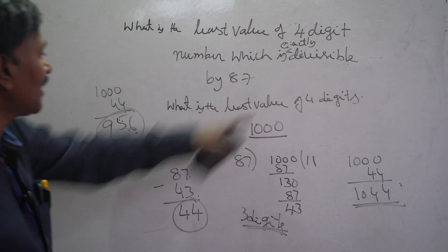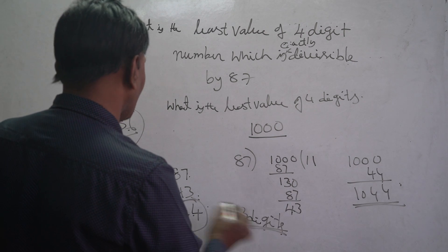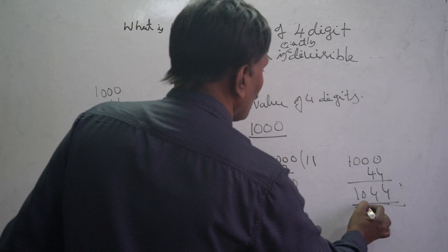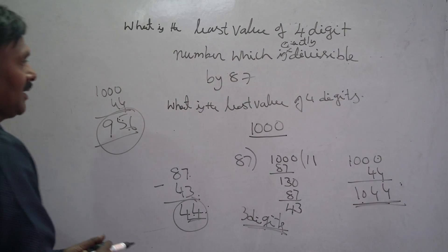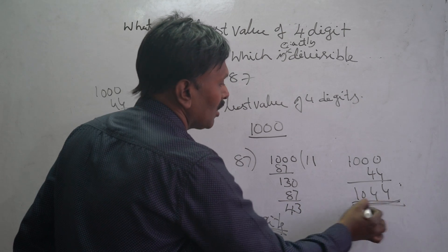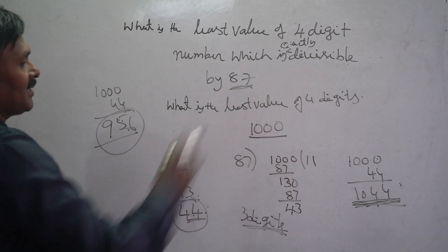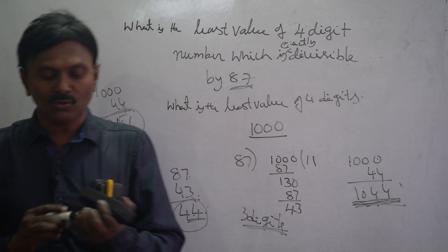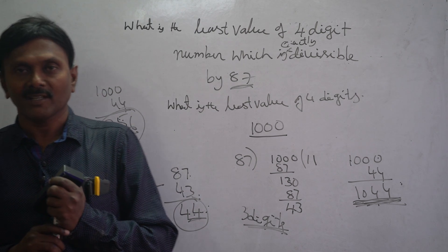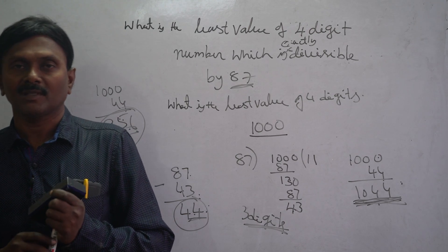So you have to add 44 to 1000. The output is 1044. The least value of the four-digit number which is exactly divisible by 87 is 1044. I hope you understood well. If you like this video, share it and subscribe. Our channel is A Learning Room and our website is www.alearningroom.com. Thank you very much.